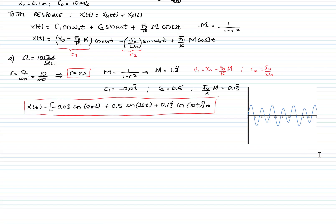The graph of this solution shows a periodic function that is a combination of two different frequencies — the natural frequency of 20 rad/s and the forcing frequency of 10 rad/s.